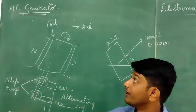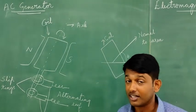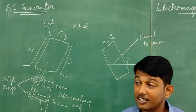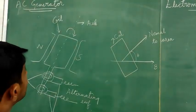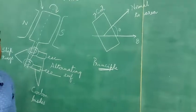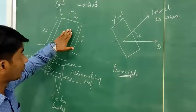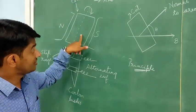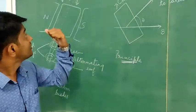Let us move on to the next topic: the AC generator. An AC generator is a device which converts mechanical energy into electrical energy. This AC generator was developed by Nikola Tesla. The principle of the AC generator states that when the coil rotates in the presence of a magnetic field, the effective area of the coil changes, and due to this change in effective area, an induced EMF is formed in the coil.